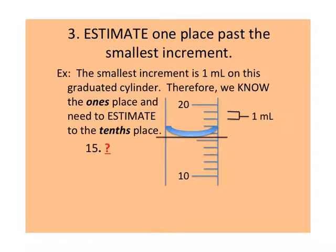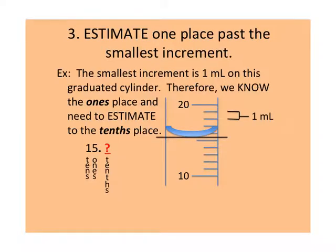Looking at this graduated cylinder's volume, we can see that if we measure from the bottom of the meniscus, its reading is somewhere between the fifteen milliliter mark and the sixteen milliliter mark. We know and can see the ones place that the volume is somewhere between fifteen and sixteen milliliters, and now we need to estimate to the tenths place — one decimal place past what we can already see and know.